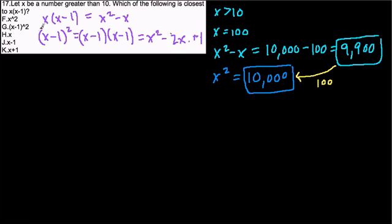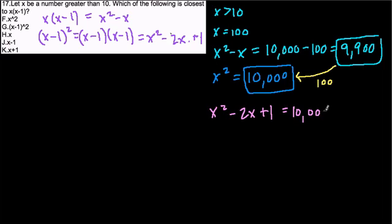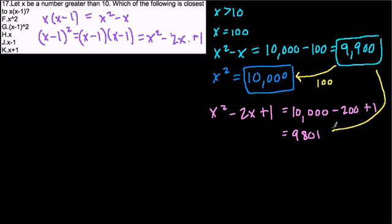The next choice is G, x minus 1 squared, which we said equals x squared minus 2x plus 1. With x equal to 100, that's 10,000 minus 200 plus 1, which equals 9,801. That's 99 away from 9,900 — so it's 1 closer to the original value. So far, these two are the closest.